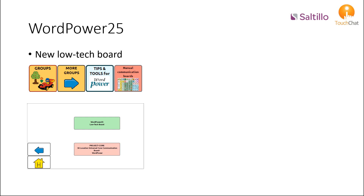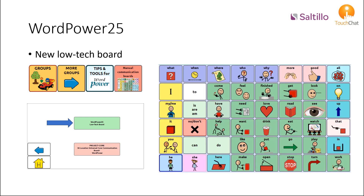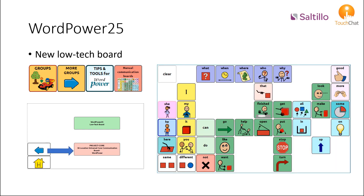First, a WordPower 25 adaptation that includes 48 words. A second option is a Project Core board that includes the 36 words aligned with Project Core.